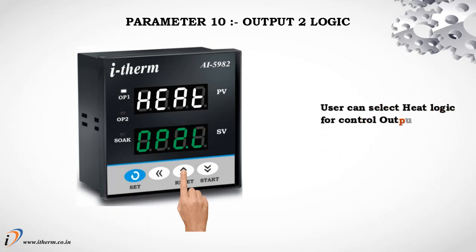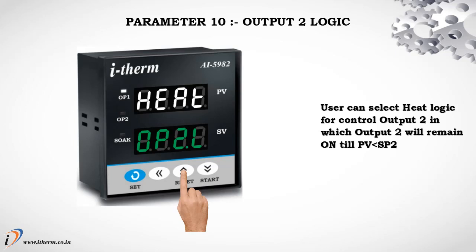Parameter 10: Output 2 Logic. The user can select heat logic for control output 2, in which output 2 will remain on till the process value is less than set point 2.